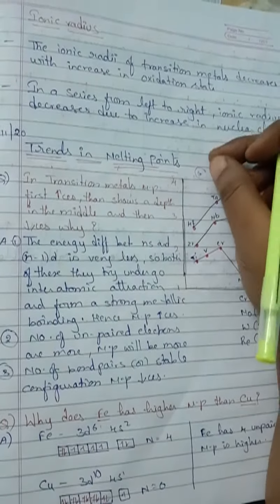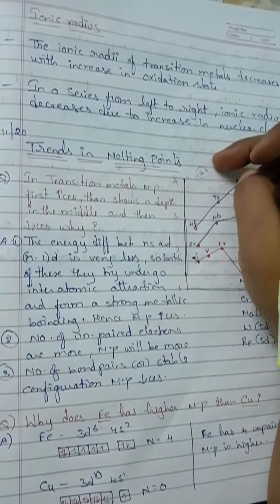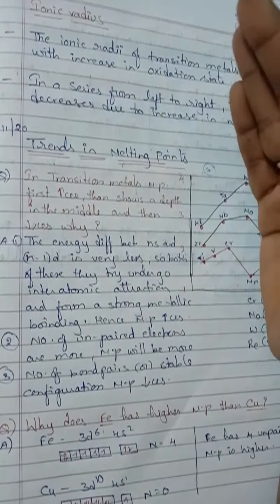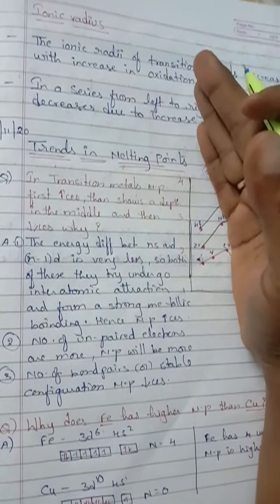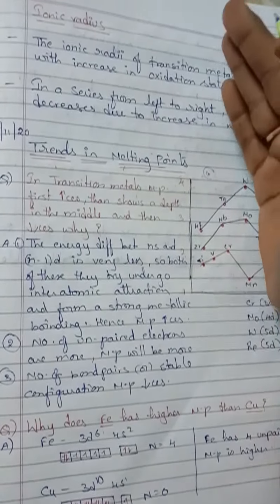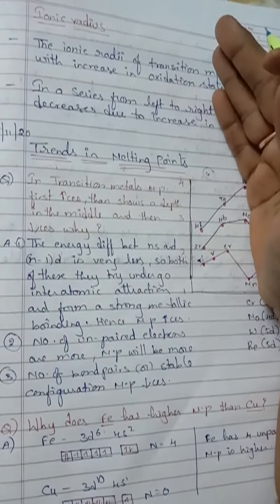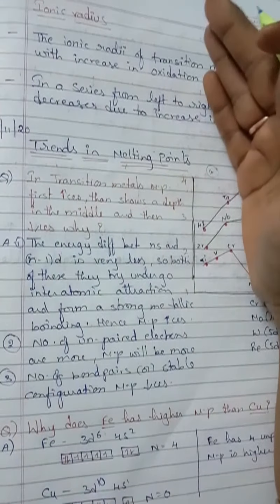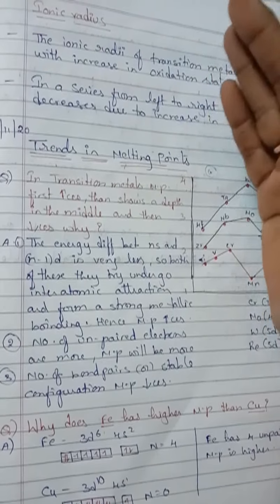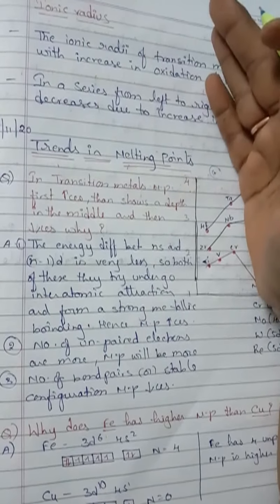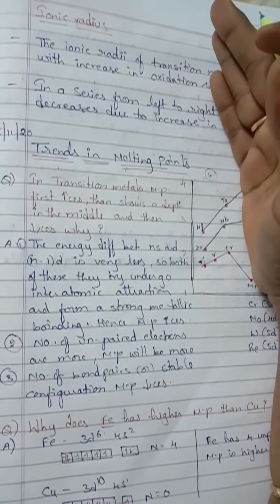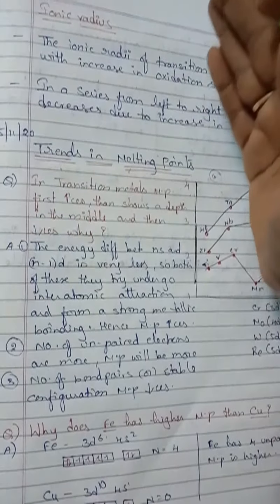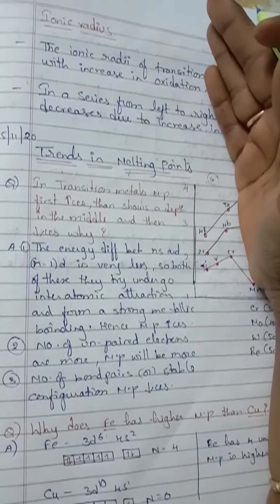A strong metallic bond will be formed. To break that bond, we require higher energy. When we use high energy, that means the melting point will also be higher. This is the first concept.